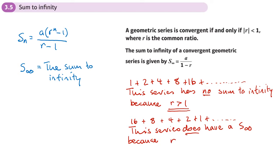We may also have a value of r which is negative, meaning you flip between a positive number and a negative number. That can still have a sum to infinity — it will only have a sum to infinity if r is between negative one and one. We can write that as the modulus of r is less than one. So we can find the sum to infinity if the common ratio is between one and negative one, because each term will be smaller than the last.